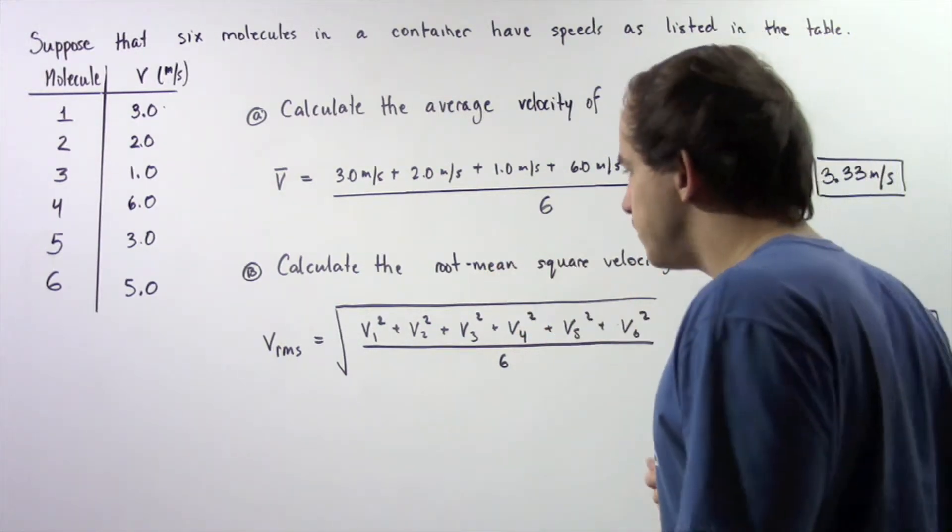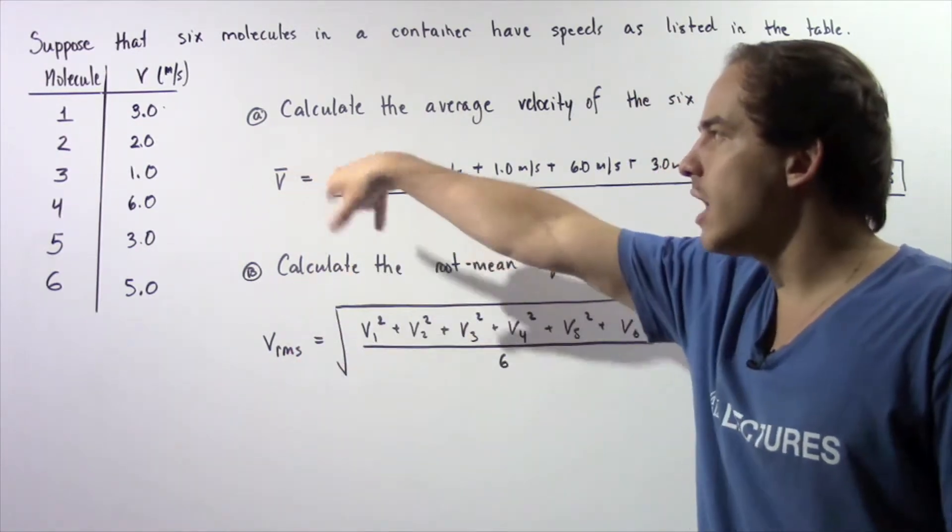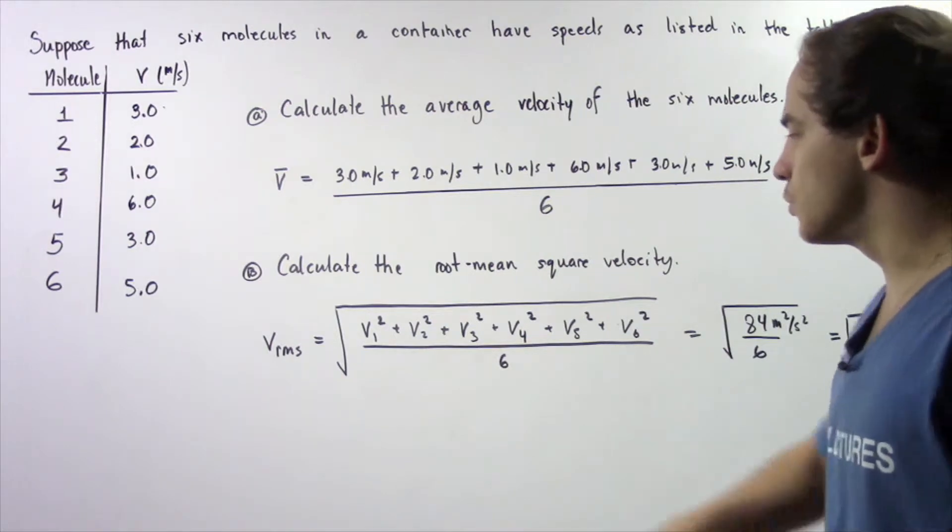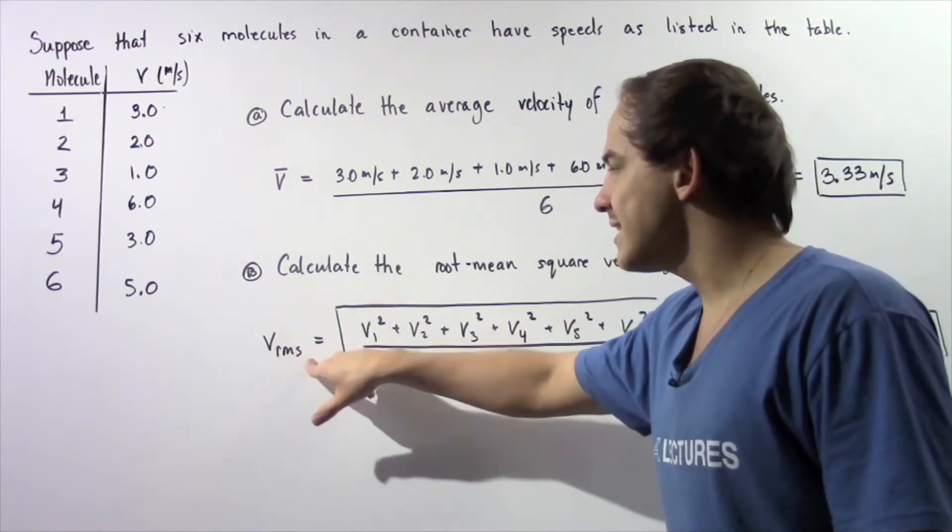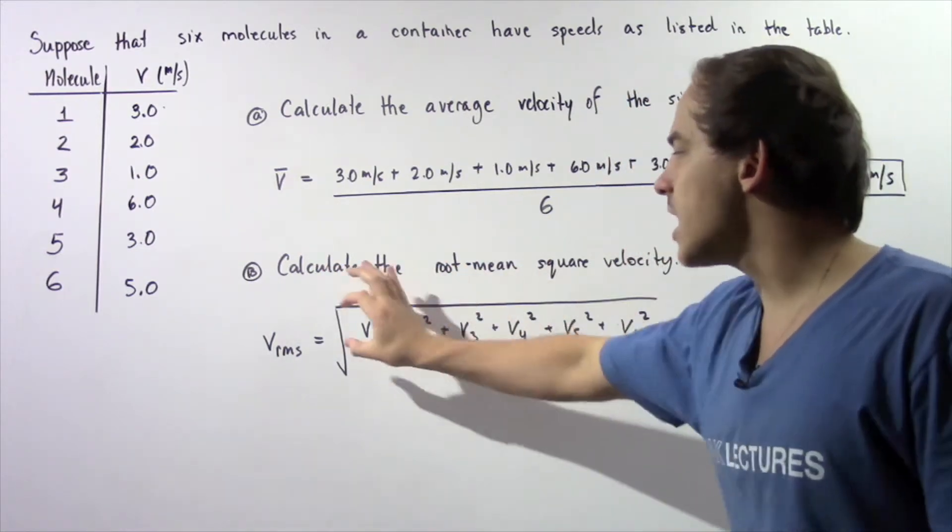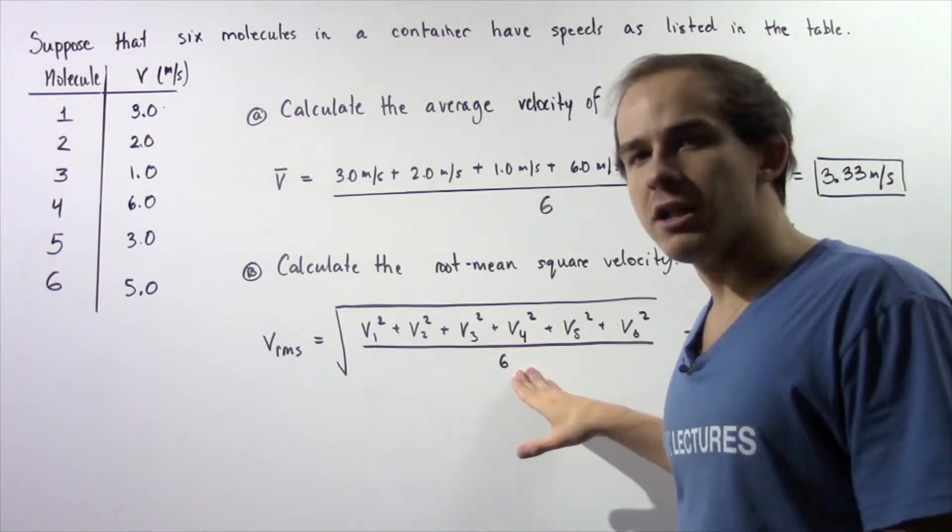Now we go to part B in which we want to calculate the root mean square velocity of our six molecules. By definition, root mean square velocity is equal to the square root of the sum of the squares divided by the total number of molecules,